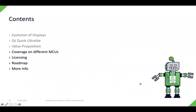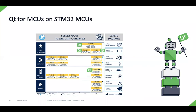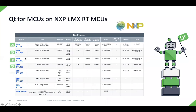Let's look at which microcontrollers are covered with Qt for MCUs. Starting with ST — they categorize their microcontrollers into high-performance, mainstream, ultra-low-power, and wireless. The ones with a 2D graphics accelerator are the STM32H7, STM32F7, and STM32F4 in high-performance, and the STM32L4+ in ultra-low-power — all supported by Qt for MCUs. For NXP, the i.MX RT series includes the RT1170, 1064, 1060, and 1050 — all four have a graphics accelerator and are supported by Qt for MCUs.